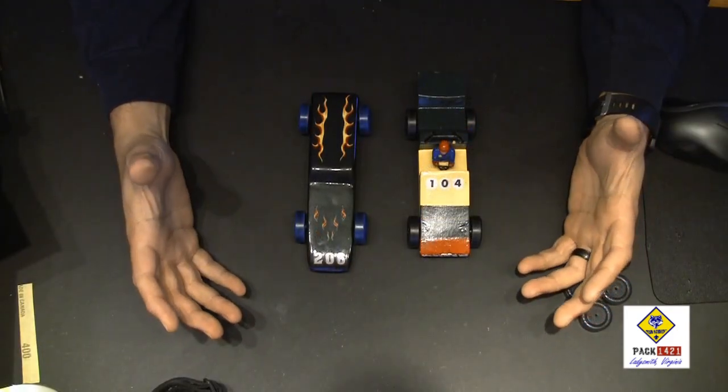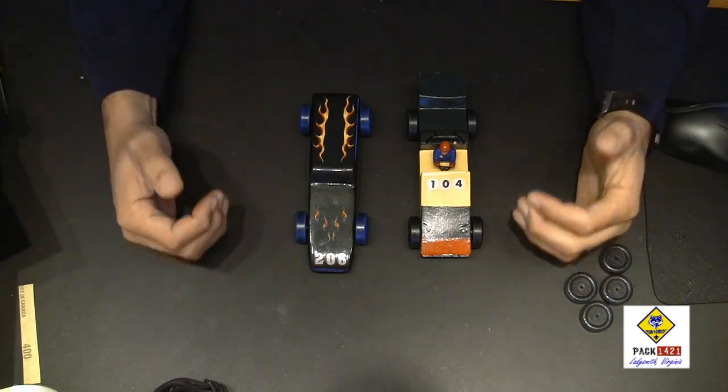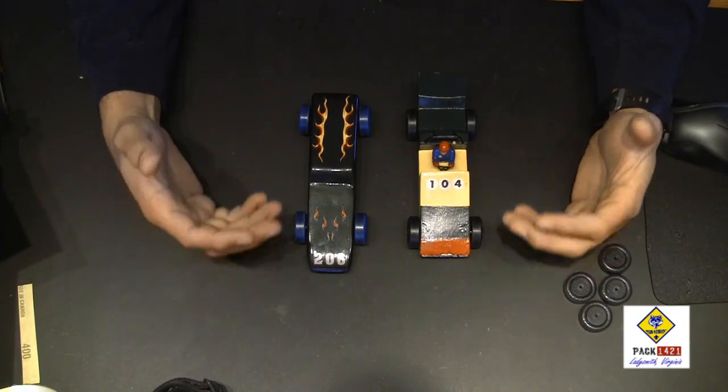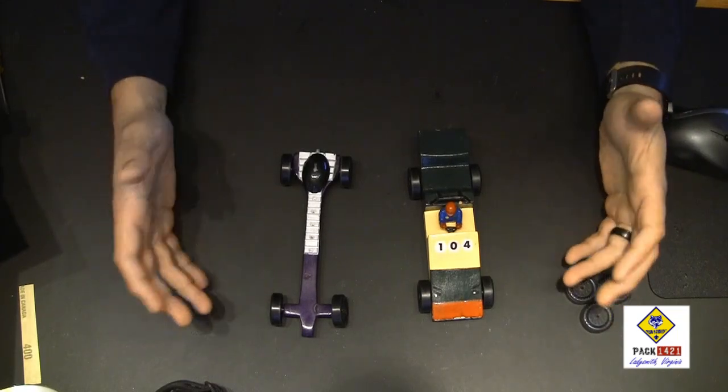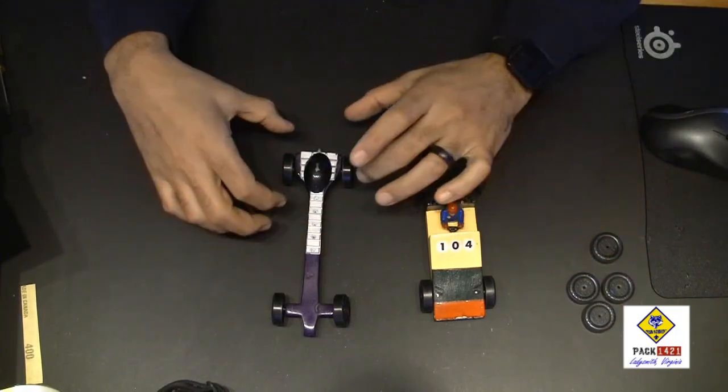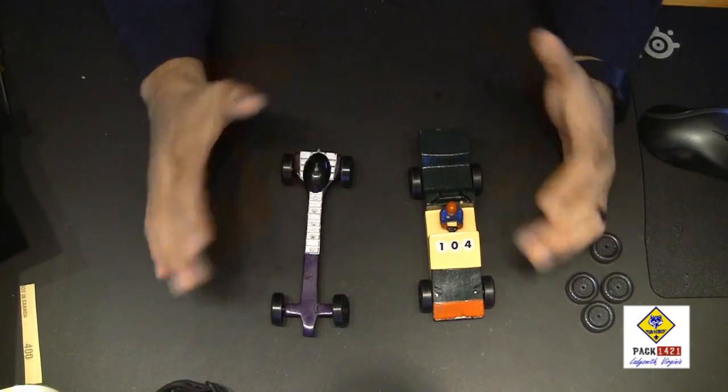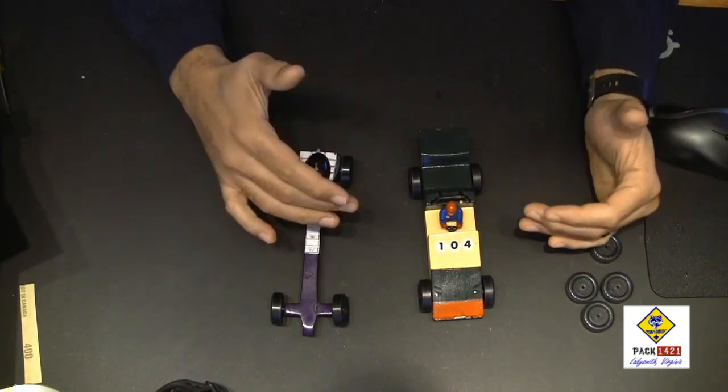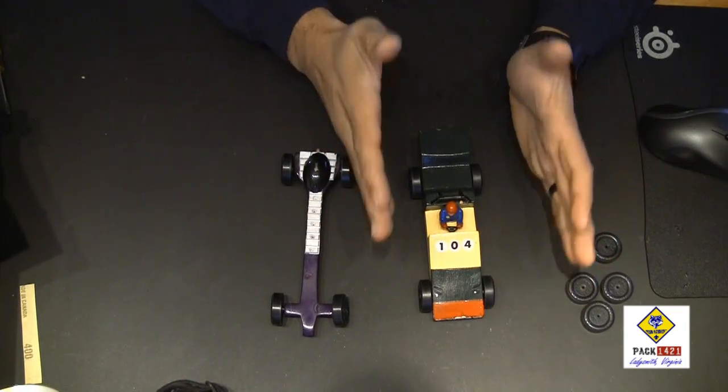So hopefully this video has given you some insight into what makes a rail riding car and why a rail rider can be faster than a car that just goes straight, as well as some of the reasons why it's more difficult to do a rail rider in a Scout class car than it is in something like an outlaw car. Also, hopefully this entire video series has helped you get an understanding of what makes a Pinewood Derby car go fast and how to build some of that speed into your car.